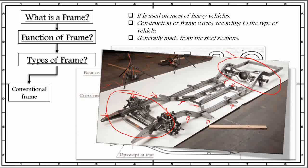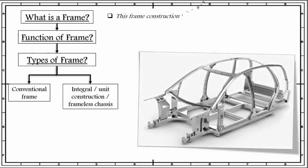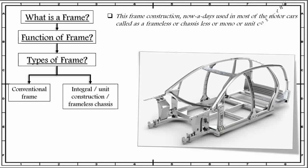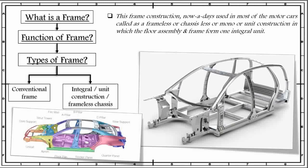The next category into which you can divide the frame is also known as integral or unit construction or frameless chassis. This frame construction, nowadays used in most motor vehicles, is called frameless or chassisless or monocoque or unit construction, in which the floor assembly and the parts of the frame form one integral unit, as shown in this figure.